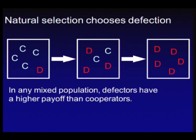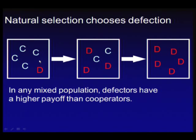Natural selection also chooses defection — I do not need rationality to see that cooperation has a hard time. In any mixed population, cooperators have a lower payoff than defectors. Natural selection increases the abundance of defectors until there are only defectors left, destroying the average fitness of the population. This works against Fisher's fundamental theorem of natural selection because it's a frequency-dependent situation. Natural selection destroys what is actually good for the population, and therefore natural selection needs help to favor cooperators over defectors.